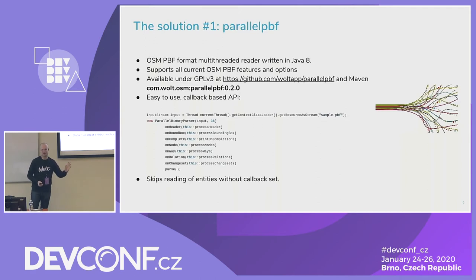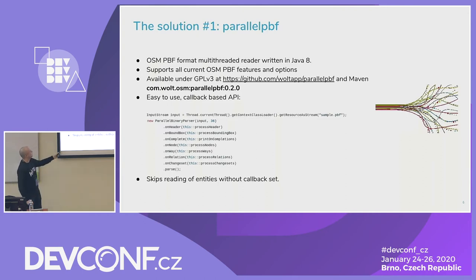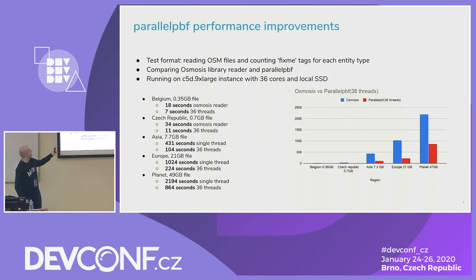The number of threads should probably be something like the number of your cores or double that. I checked both — no real difference. They are mostly limited by the underlying storage.